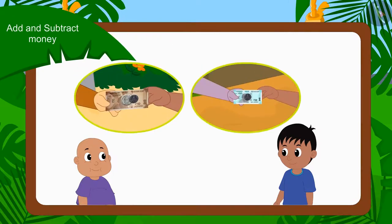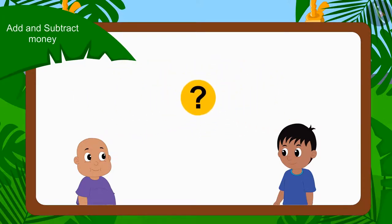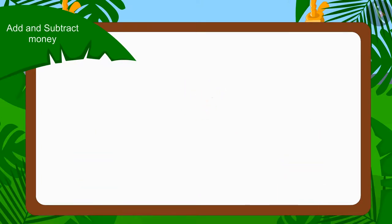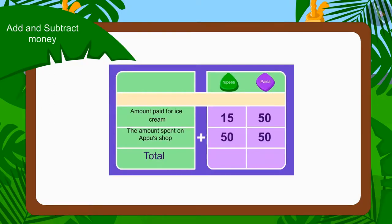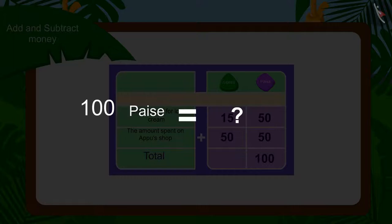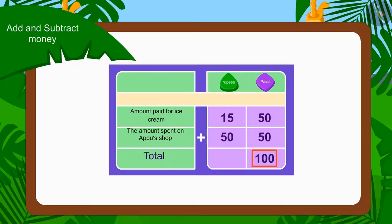First, we will find out the total amount spent by both of them. Can you add these two amounts and tell how much money Raju and Bablu have spent together? First, we will add the numbers written in paise. By adding 50 and 50, we get 100. Can we write 100 paise here? No. So what should we do? Kids, do you remember how much 100 paise is worth? Right, 1 rupee. Therefore, we will write 100 paise as carry over in the rupees column. And now, how much paise are left? Zero paise.